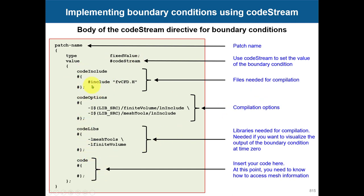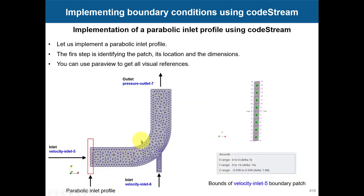In the template you reference standard libraries — this is the standard location for the source code and the standard libraries you will use. In most cases this is sufficient, though for more advanced cases you may need to add additional headers. Then you have the code block where you implement your actual boundary condition, following specific guidelines we will see using this example case.